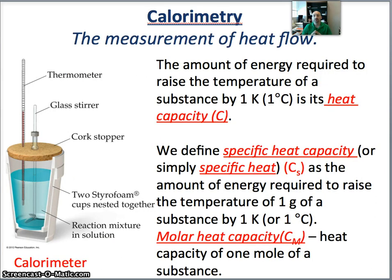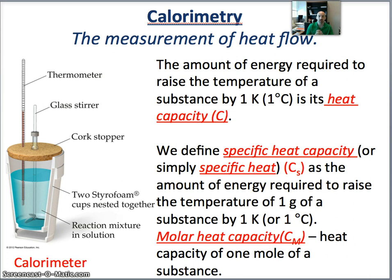Now that we've defined enthalpy, we need to learn what methods are used to determine the value of this change in enthalpy experimentally. This can actually be done by measuring the temperature of the reaction under constant pressure. Under constant pressure, the enthalpy of the reaction equals the heat flow — delta H equals QP. The measurement of heat flow is called calorimetry, and we use a calorimeter to measure that heat flow.